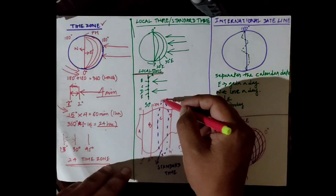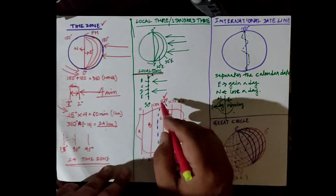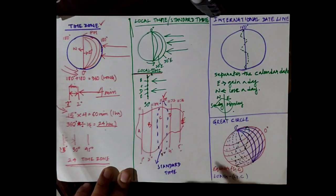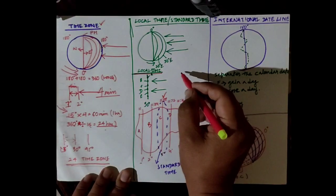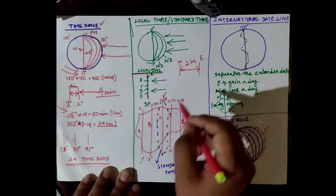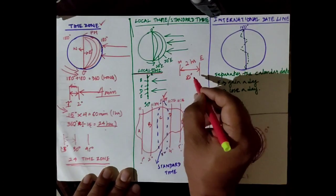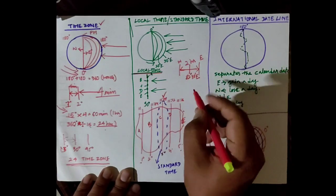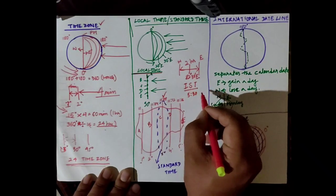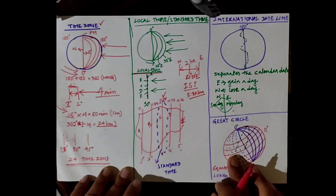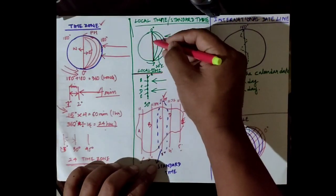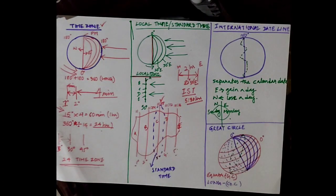To avoid this confusion, a country takes a central meridian, and the local time of that central meridian is considered as the standard time, followed by both the eastern and western parts of the country. Similarly, India has a time difference of two hours from west to east — from Gujarat to Arunachal Pradesh. The central meridian passing through 82 degrees 30 minutes East is considered as IST, or Indian Standard Time, which is 5 hours 30 minutes ahead of GMT — Greenwich Mean Time, the time of the prime meridian.